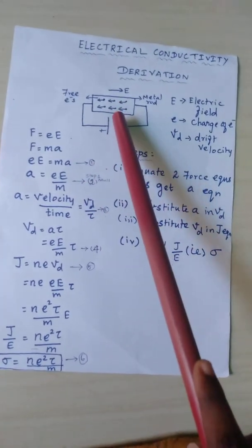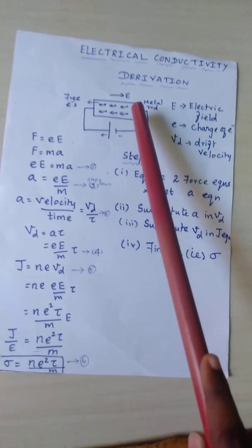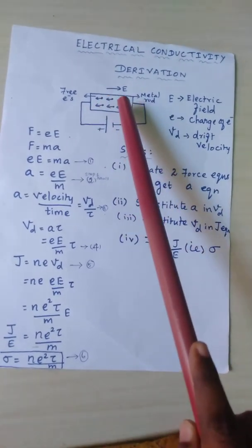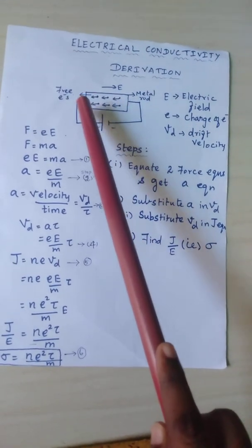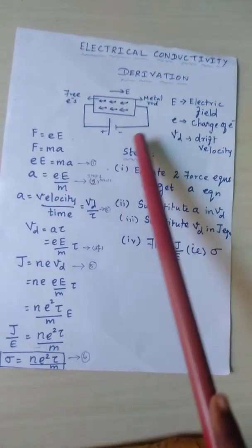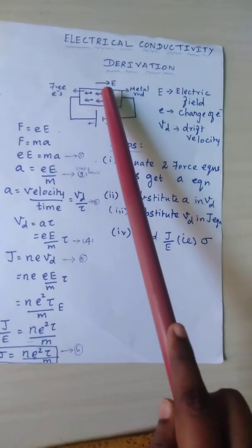First, this is the diagram. This rectangular shape is a metallic rod. This rod has a lot of electrons. These RO marks represent the free electrons, and the two ends of the rod are connected to the positive and negative power supply - that is, we are going to apply an electric field.